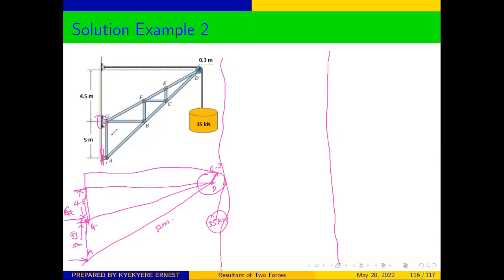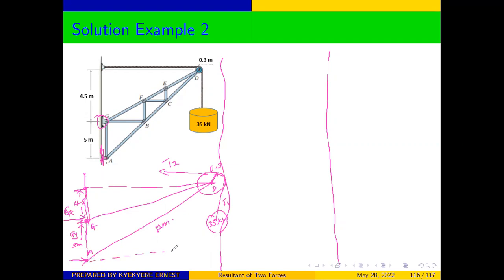In drawing the free body diagram, because this side here is a cable, we need to indicate that cables always point away from our point of interest. In this case our point of interest is the pulley, so the cable is going to point away. We call the tensions T1 and T2. We don't know the horizontal distance from this point to that point, so we represent that distance with x.